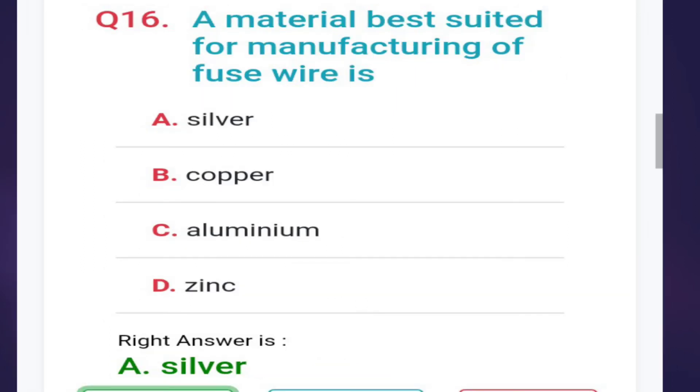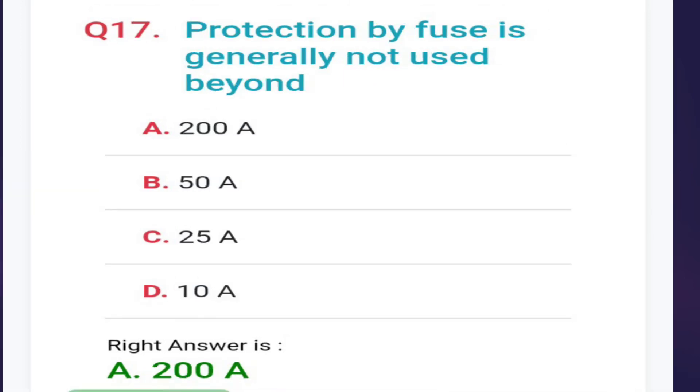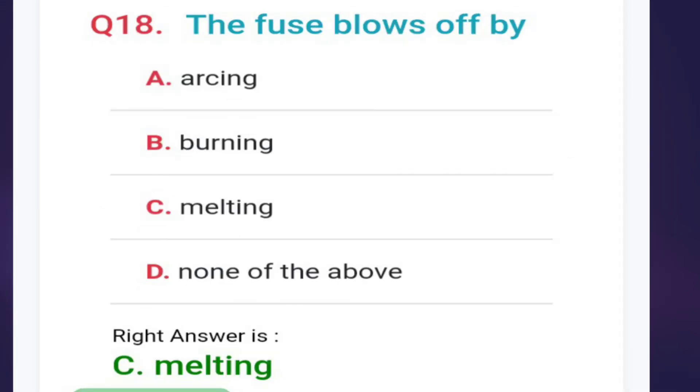Sixteenth: the material best suited for manufacturing of fuse wire is silver, copper, aluminum, or zinc. The correct option is answer A, silver. Seventeenth: protection by fuse is generally not used beyond 200 ampere. Eighteenth: the fuse blows off by arcing, burning, melting, or none of the above. The answer is option C, melting.